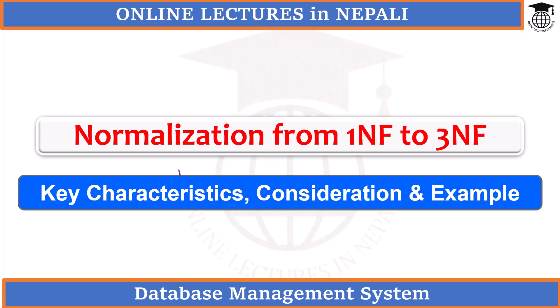Hello everyone. I am here in the database management system playlist. In this tutorial, I will cover normalization from first normal form, second normal form, to third normal form — 1NF, 2NF, 3NF — as well as normalization and functional dependency. I have already uploaded tutorials related to them separately, but in this specific tutorial I will use the same example throughout.